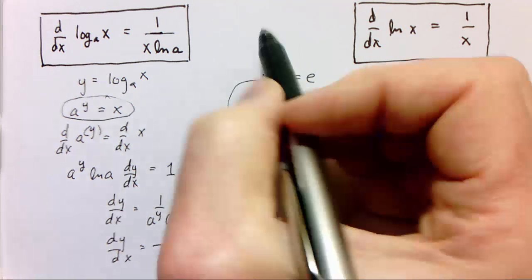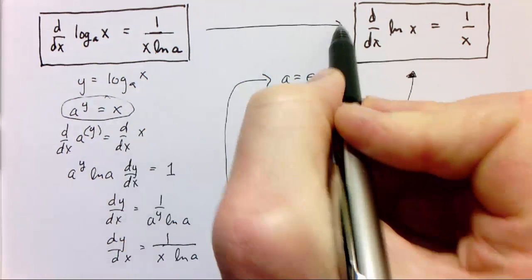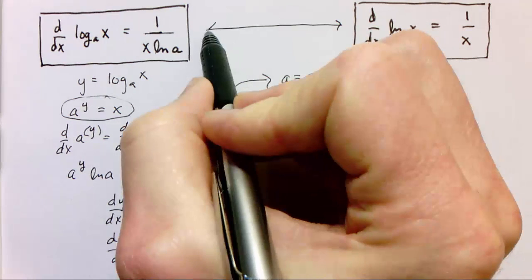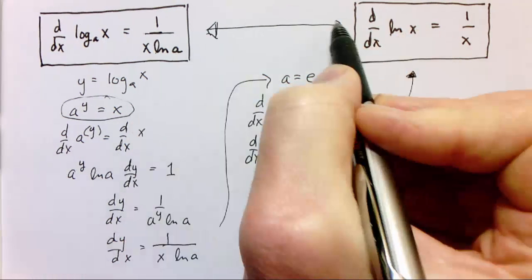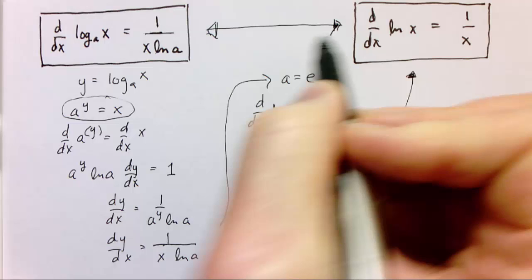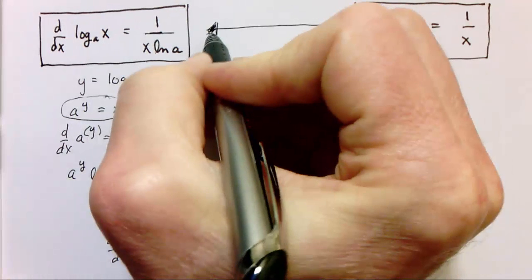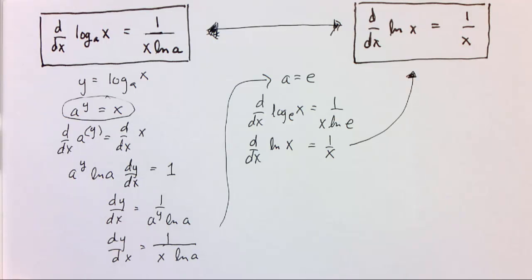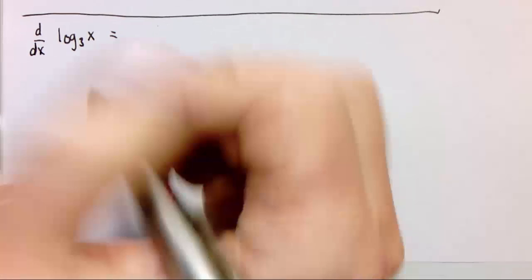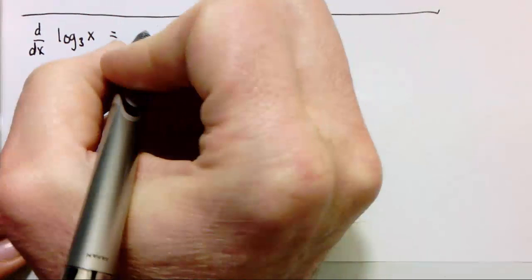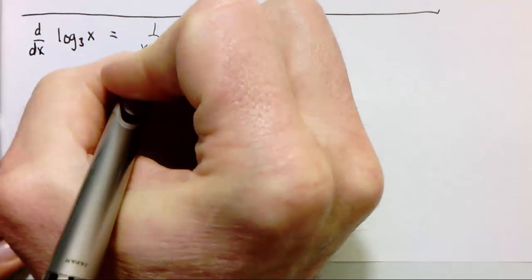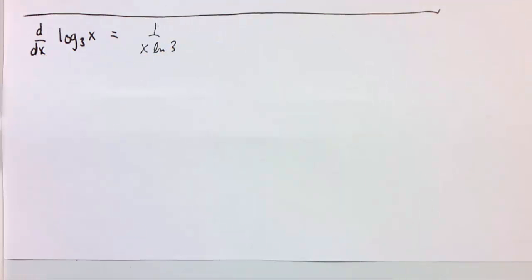These two rules are ones you pretty much have to memorize. We can understand where they come from, but there's no getting around just memorizing them. For example, the derivative of log base 3 of x would be 1 over x times the natural log of 3. On the next page we'll look at some more complicated examples.